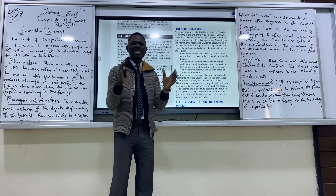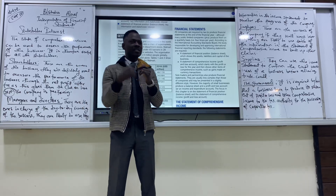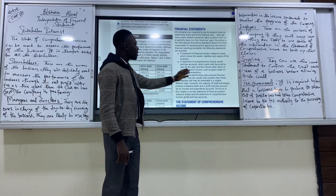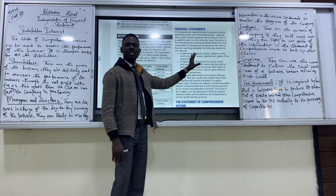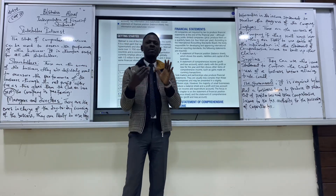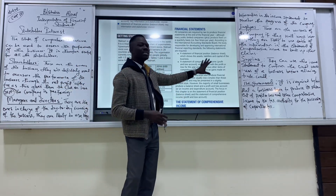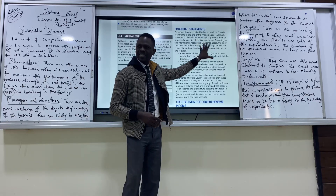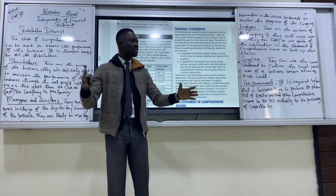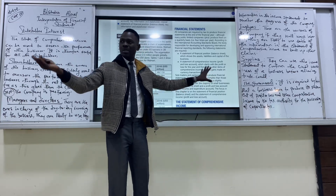A statement of financial position, which is the balance sheet — the items in the balance sheet are the assets, liabilities, and the capital of the business. A statement of comprehensive income is for profit and loss; the items here are your income and expenditures — what comes into the business and what goes out. The balance sheet shows how big or small the business is, while the statement of comprehensive income covers the transactions in terms of what comes in and what goes out.